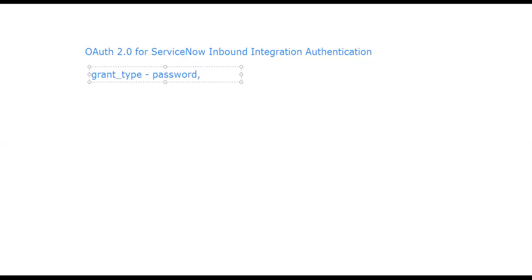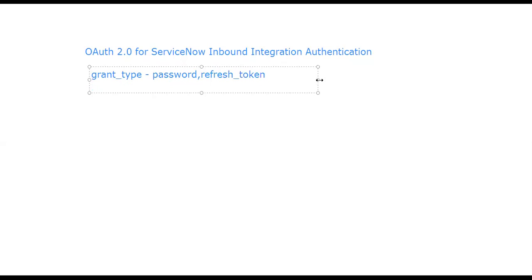In ServiceNow, there are two types of grant types through which a third-party tool can authenticate. One is password and the other is refresh token. These are the two grant types supported by OAuth 2.0 in ServiceNow.